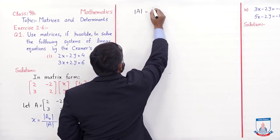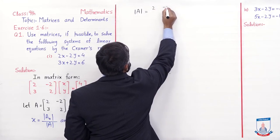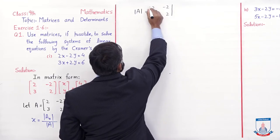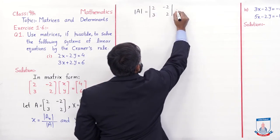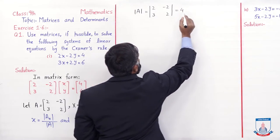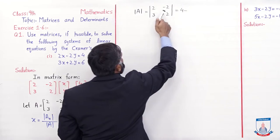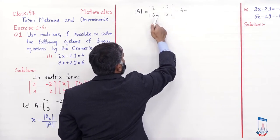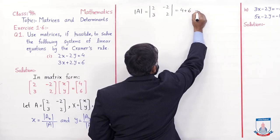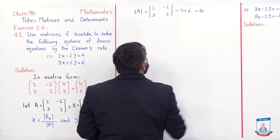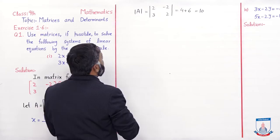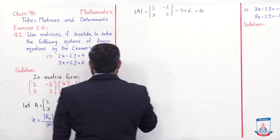Determinant solve karte hain: diagonal entries ko multiply karein — 2 × 2 = 4, minus non-diagonal entries ko multiply karein — minus 2 × 3 = minus 6, toh minus into minus = plus 6. Toh 4 + 6 = 10. Det(A) ki value 10 aayi. Chunki det(A) 0 ke equal nahi aaya, is liye hum iska solution karenge.